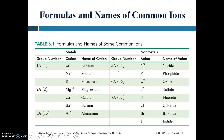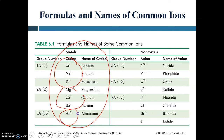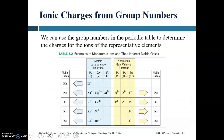Here are some common ions. On the left are metals after losing electrons — groups 1A, 2A, and 3A. On the right are non-metal representative elements from groups 5A, 6A, and 7A. For metals, the ion charge matches the group number: group 1A is +1, group 2A is +2, group 3A is +3. For non-metals, subtract the group number from 8: 8 minus 7 = -1, 8 minus 6 = -2, 8 minus 5 = -3.